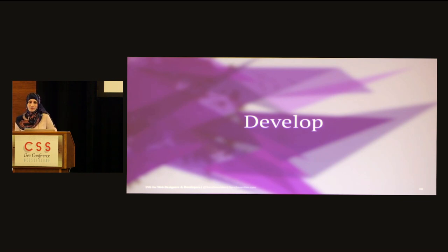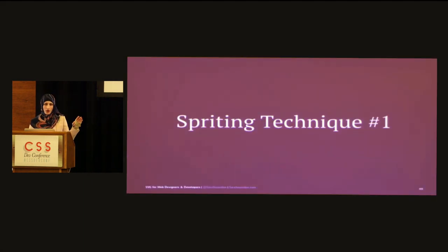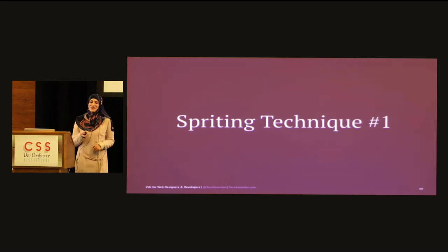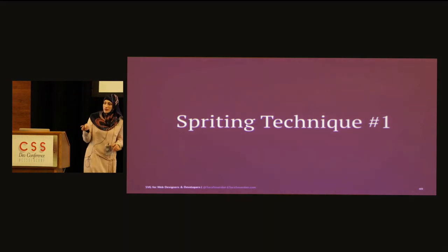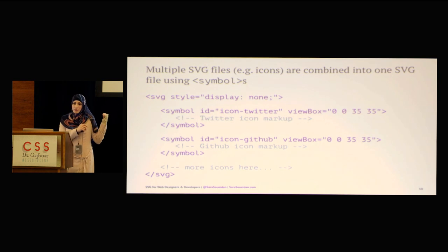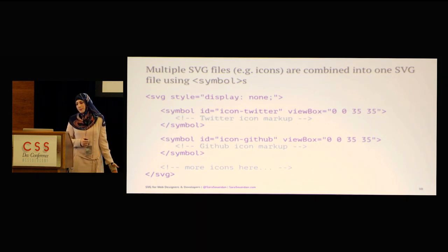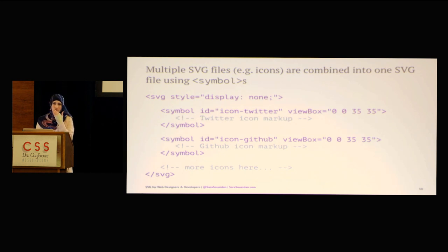Now let's talk about development. How many of you already use SVG for icon systems? There are three main spriting techniques for SVG, each different with its own pros and cons. One of them is very similar to icon fonts. The first and most popular technique is used when you export multiple artboards — you end up with multiple SVG files. There are tools that help you create the SVG sprite from those images — for example SVG Store, which combines all your icons into one SVG file.